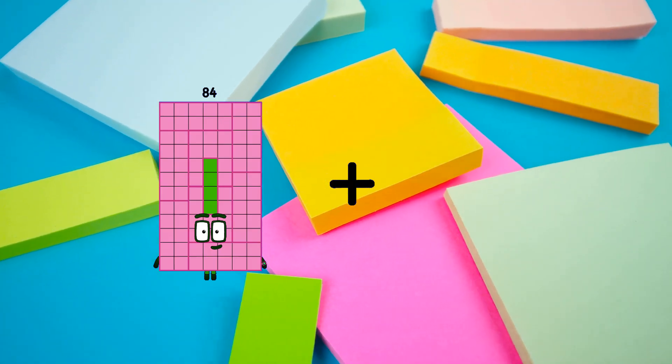84 plus 63 equals 147. 88 minus 59 equals 29. 72 plus 8 equals 80. 101 minus 39 equals 62. 41 plus 69 equals 110.